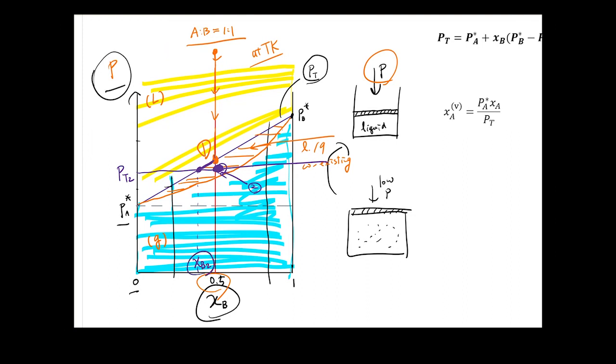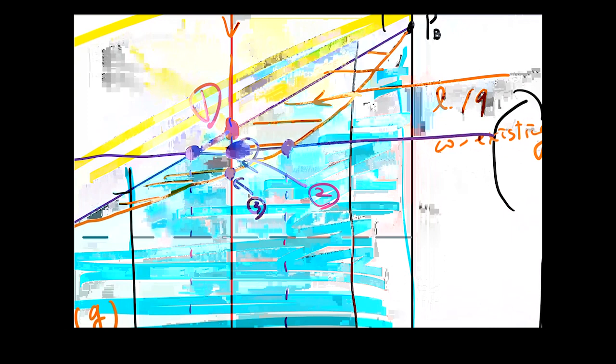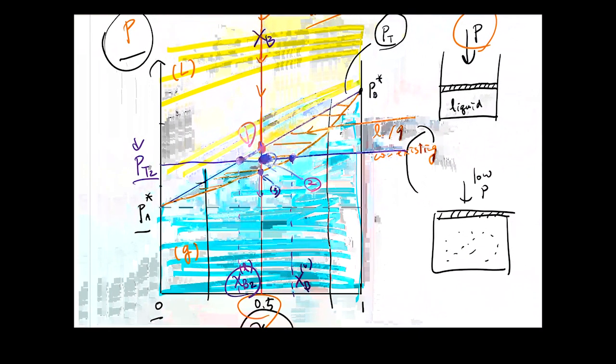At pressure P_t2, the concentration of B in the liquid is xB2. Because B is more volatile, the composition of B in the vapor phase is higher. Continuing to lower pressure, at point 3 you reach the dew point — the pressure at which the very last drop of liquid vaporizes. Beyond that point everything exists as gas.